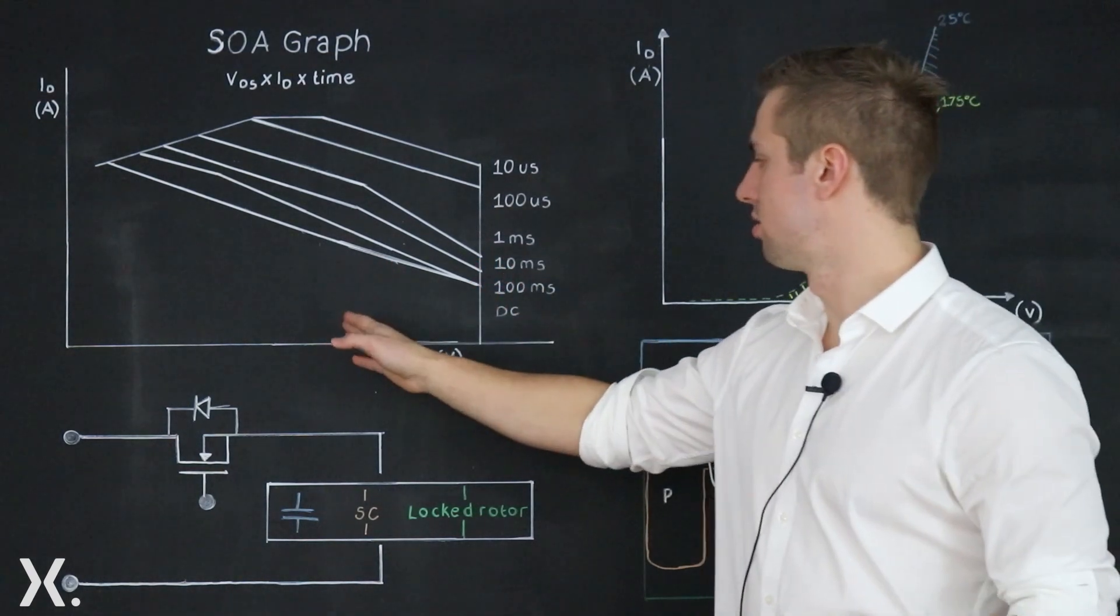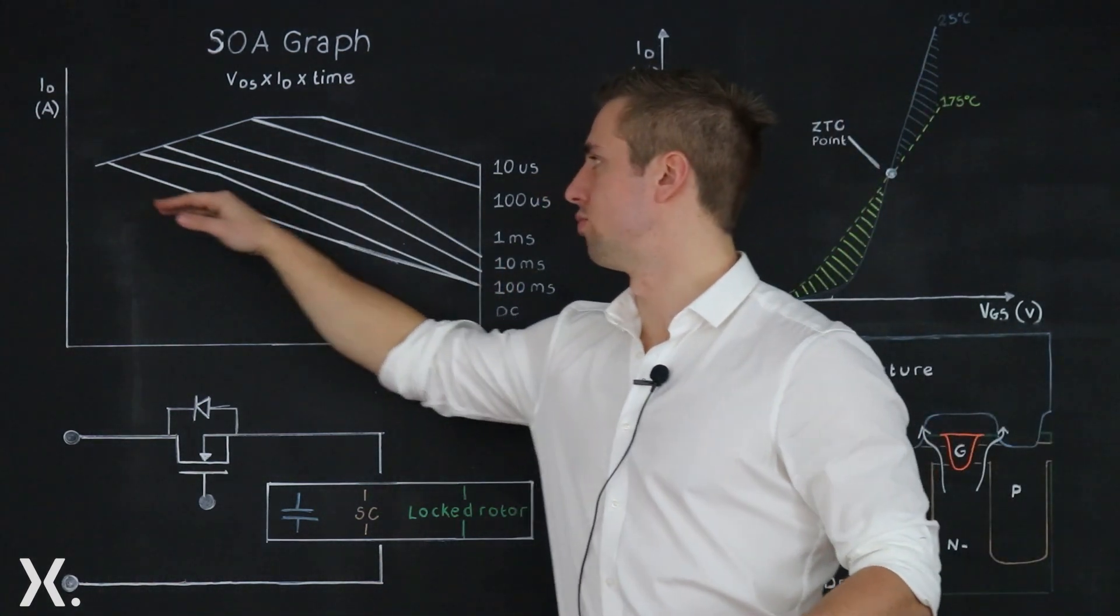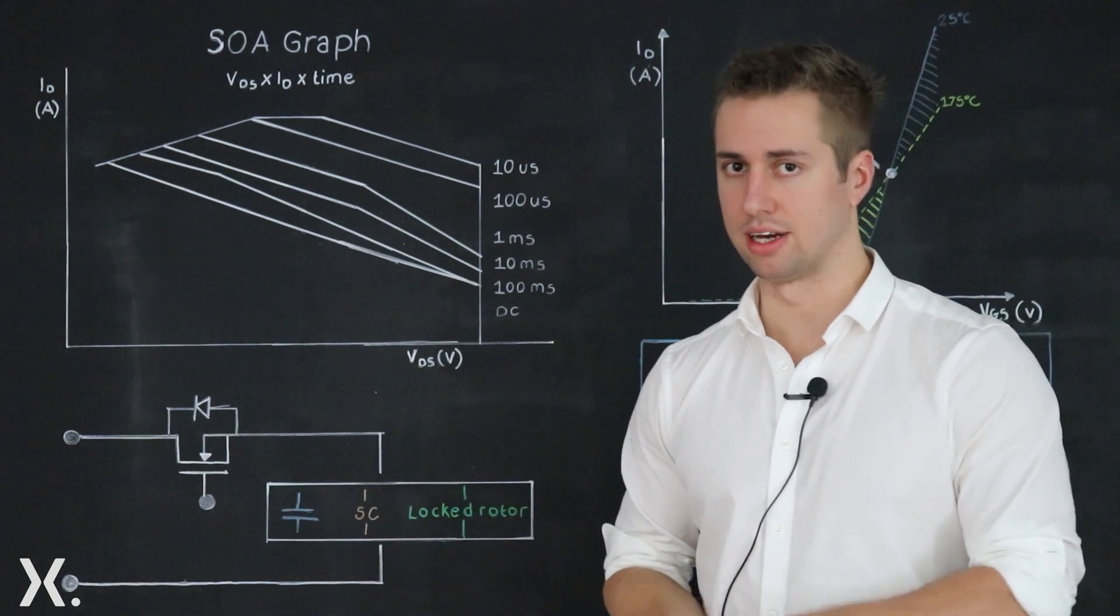So if we put a certain voltage here for 10 milliseconds that will allow a certain amount of current. If we put in more current we're outside the safe operating area and the device is more at risk of failing.